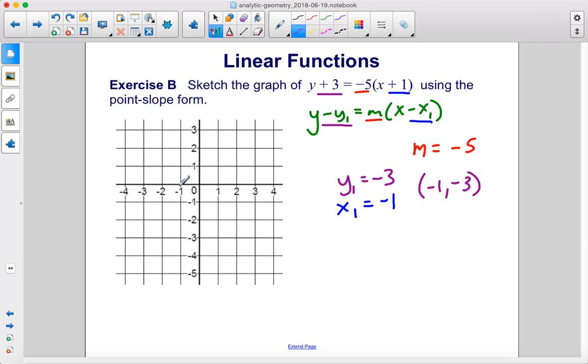So negative 1, negative 3. And our slope is negative 5. Therefore, it will be going downhill from left to right. So negative 5 over 1. So if we go backwards, we would go up 5. 1, 2, 3, 4, 5. And then to the left, 1. And that's our line. So we just draw the line between the two points like so.